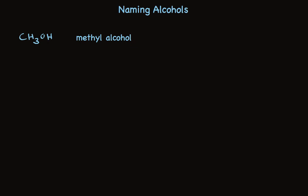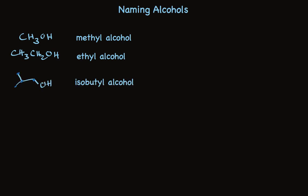The one-carbon alcohol is called methyl alcohol. If it has two carbons it's called ethyl alcohol. By the time you get to four carbons you can have more than one skeleton, so we need a little bit fancier name. Rather than calling it butyl alcohol we have to specify the carbon skeleton. So this is isobutyl alcohol because it has a three-carbon chain and then one carbon branching from it.